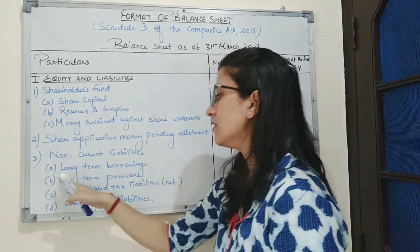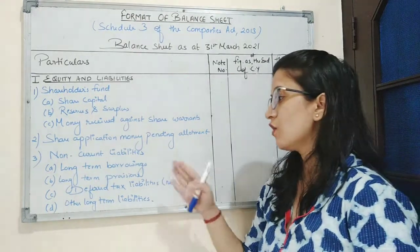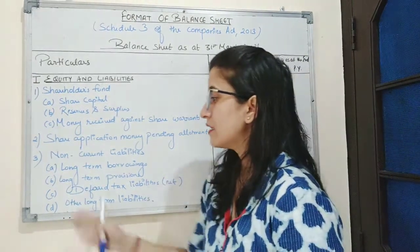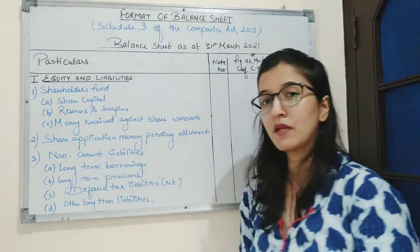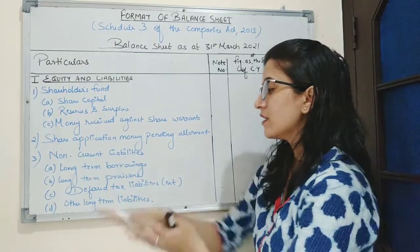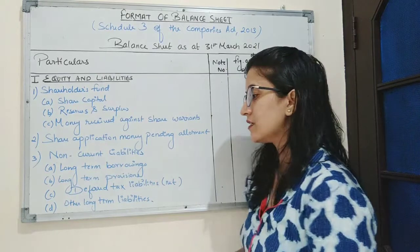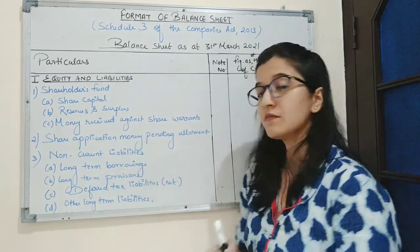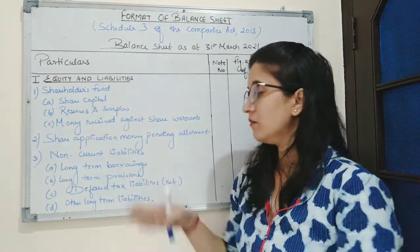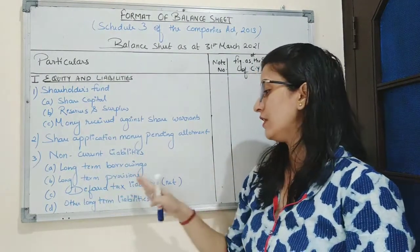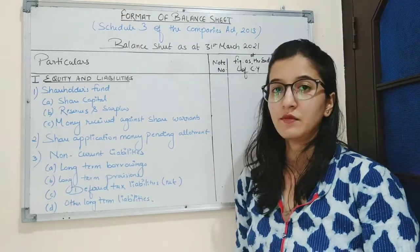The first sub-part is long-term borrowings. Long-term borrowings can be loans from bank or issue of debentures. Second is long-term provisions — these are provisions made for the long term. Third sub-part is deferred tax liabilities. Deferred tax liabilities means when the accounting income of a company exceeds the taxable income. And the last one is other long-term liabilities.